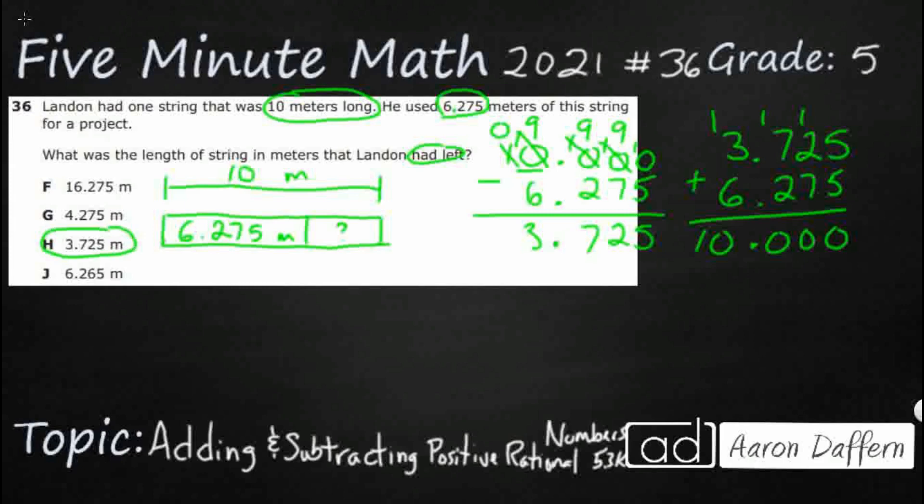Now, let's go ahead and take a look at some of these incorrect answers. Take a look at F right there. If I didn't know what to do, I still have to line it up. But if I just took my 10 and my 6.275 and I just added them, now guess what I'm going to get? 16.275. So, wrong operation.